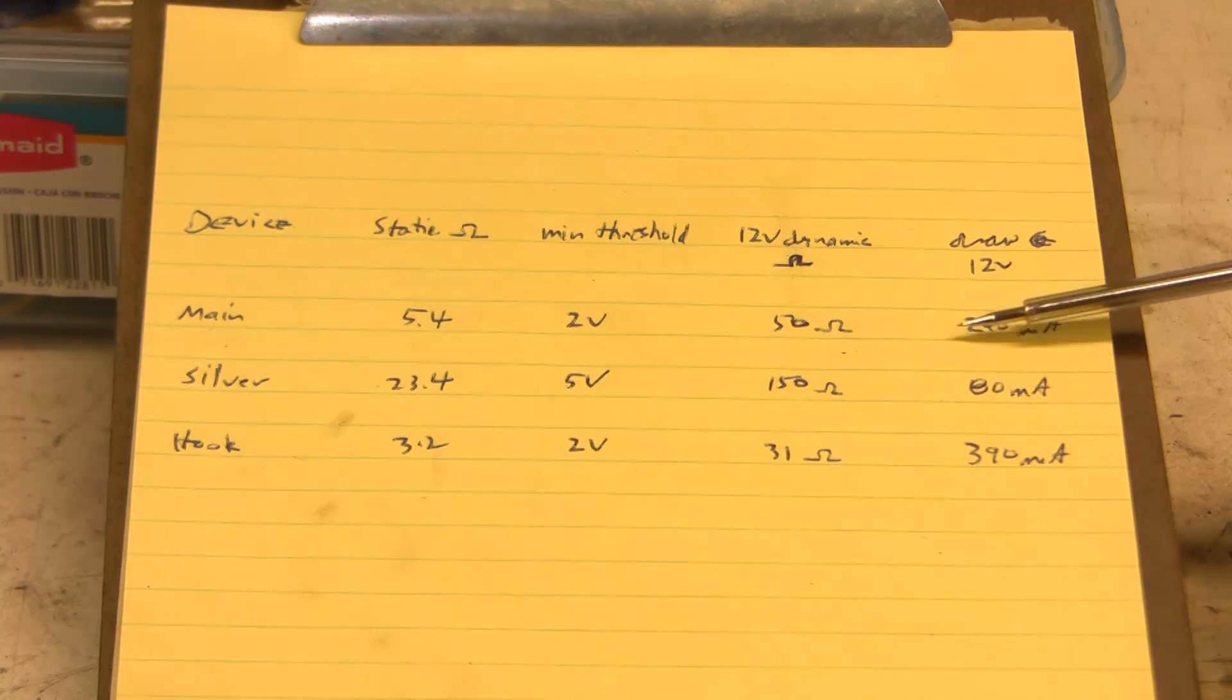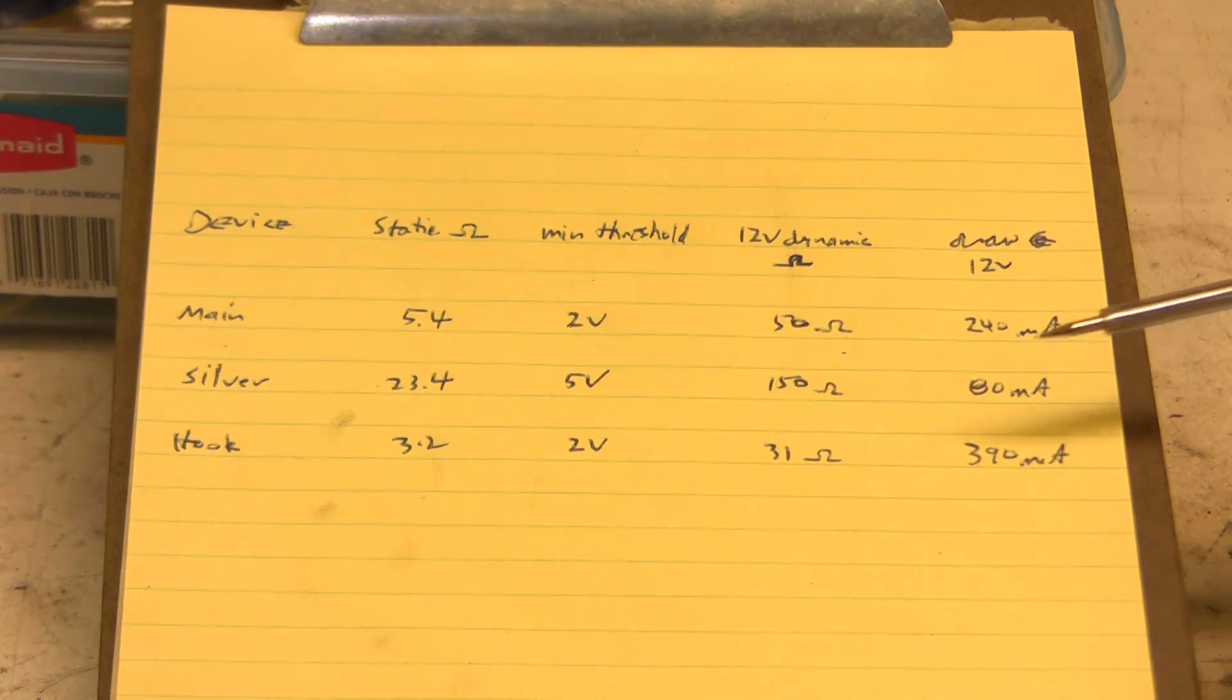The current draw of the higher resistance device was only 80 milliamps, so that might be a better choice in the situation where you don't want much current going through the wire. But there are other factors that come to play as well, and so which one is better depends on the application.